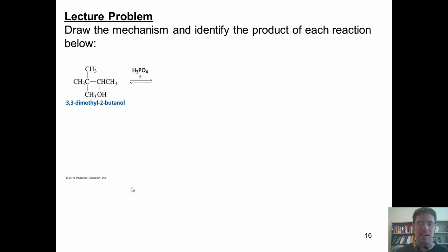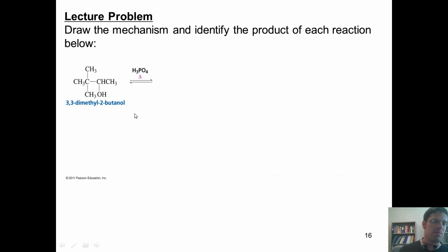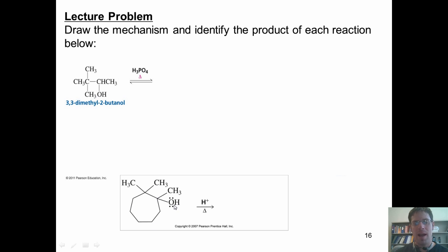Here are some more examples of dehydration reactions for you to practice on your own. If I take this molecule and treat it with phosphoric acid — and yes, you can use phosphoric acid as well as sulfuric acid and it works just the same — what product or products am I going to form? Which of those will be the major product? And by what mechanism will it proceed? Same question for this molecule, which is a trimethylated cycloheptanol being treated with acid and heat.